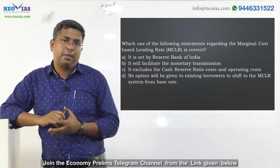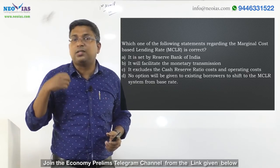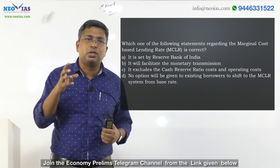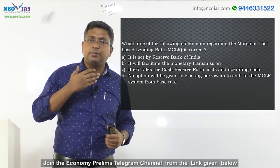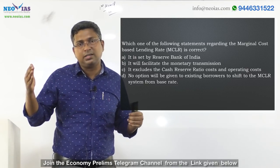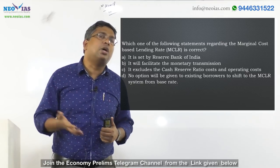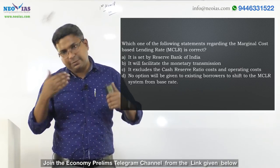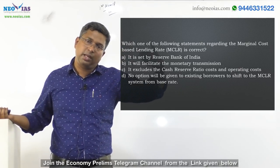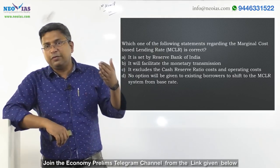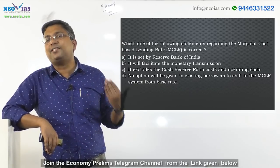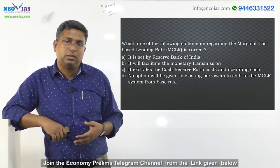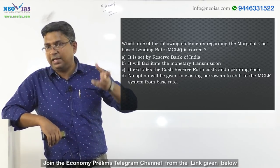Two new things added under MCLR: first, the cost of fund will be based on marginal cost — that is the latest cost of funds the bank has to incur to raise funds. Second, it will take into consideration tenure premium, meaning as the tenure of a bank loan increases, the bank has the right to increase the interest rate. The other two components — CRR cost and operational expenses — are continued as in the base rate system. So based on four parameters: marginal cost, tenure premium, operational expenses, and CRR cost.